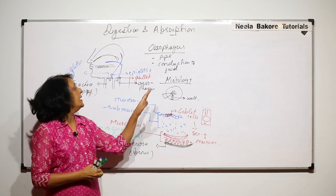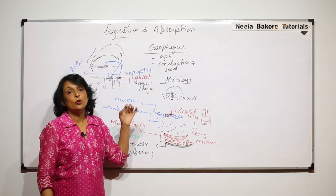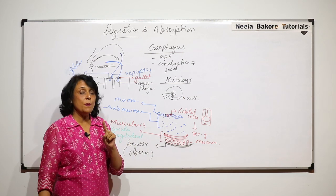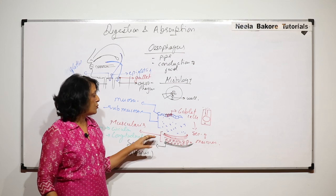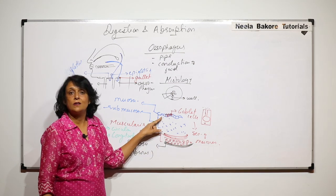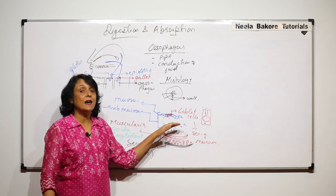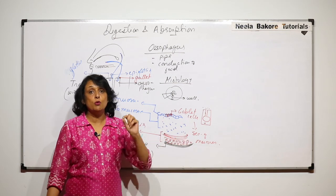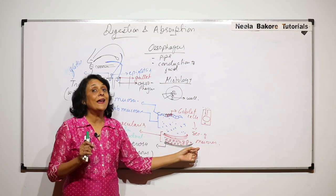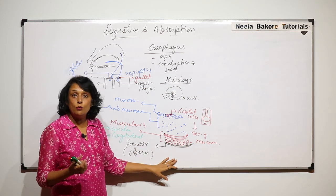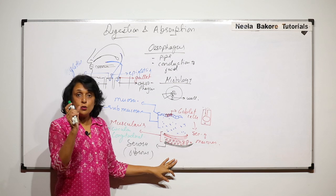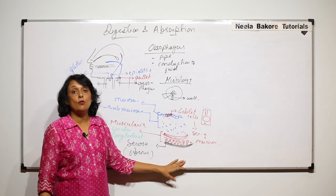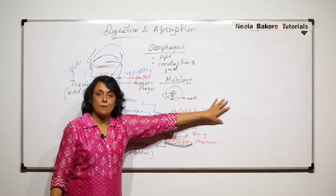All parts of the alimentary canal from esophagus onwards have these four layers, but there will be slight differences. Muscular layers can be bigger or thinner. The mucosa can change — here in the esophagus there are only goblet cells, but in other parts there will be glands. The mucus secreted in the esophagus is not very thick. In contrast, the mucus secreted in the stomach is thick mucus, because it has to protect against pepsin enzyme and hydrochloric acid.